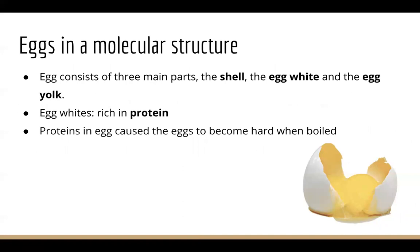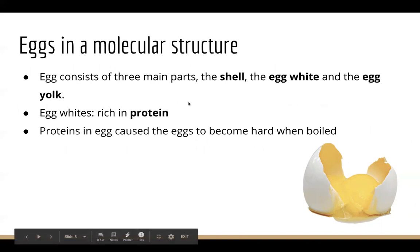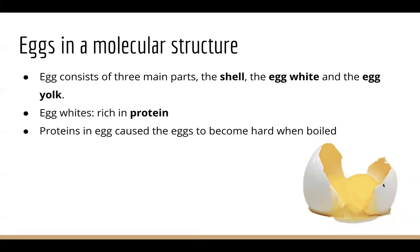Now, here's another question: how did the egg change from this yellowish liquid into a hard white solid? To answer this question, we need to first talk about the egg's molecular structure. We know that eggs consist of three main parts: the shell, the egg white, which is a liquid, and egg yolk. In this case, I want to mainly focus on the egg white. Egg whites are rich in protein, and it is the protein in the egg that caused the eggs to become hard once it's boiled.